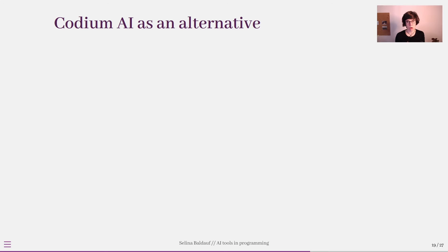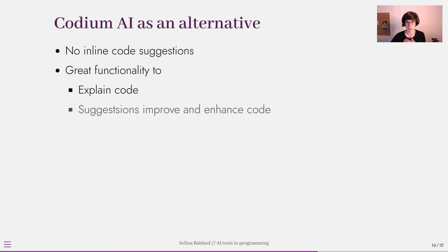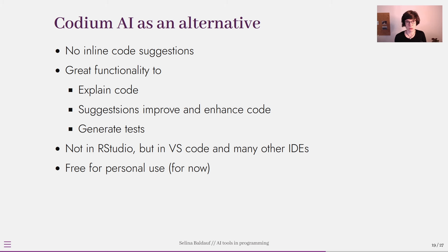Now I want to give you an alternative integrated AI tool you can use if you cannot use GitHub Copilot: Codium AI. Codium AI does not provide inline code suggestions, which is why I don't use it as frequently. However, Codium AI has really great functionality to explain code and give suggestions to improve and enhance your code. It's also really great at generating tests — if you write a lot of functions and need unit tests, Codium AI might be a tool you want to try. Codium AI is not available for RStudio yet but works in Visual Studio Code and many other IDEs, and for now it's free for personal use.